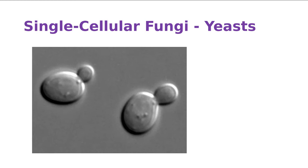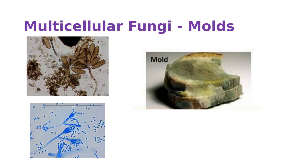We talked about the molds, and several components we use to identify them: spores and mycelia. Here's bread mold, and the fuzziness on it is the mycelia. The mycelia is this elongated structure.